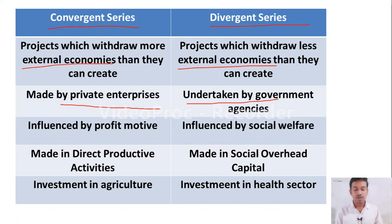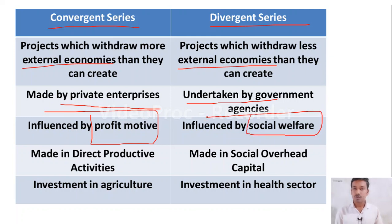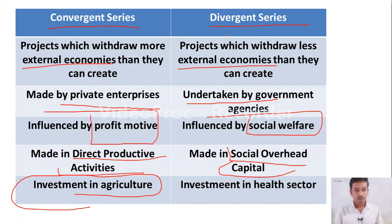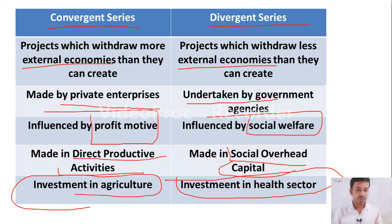Convergent series involves investment made by the private sector influenced by profit motive, in directly productive activities — for example, agriculture and industries. Divergent series involves investment undertaken by government agencies for social welfare, made on social overhead capital — for example, health sector, education sector, power, and transportation.